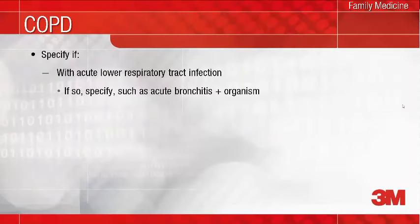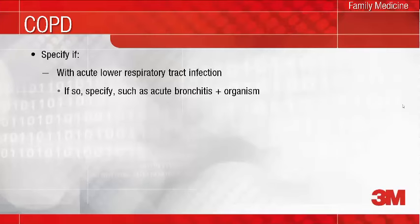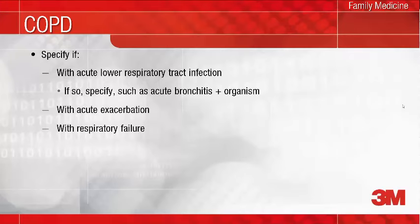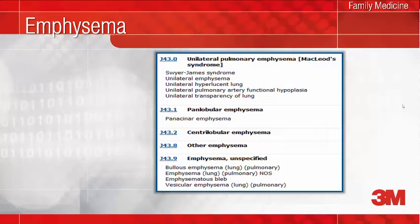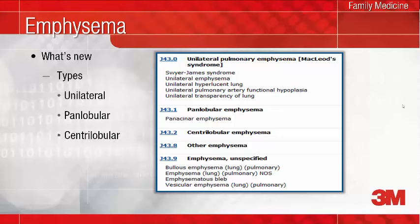ICD-10 differentiates COPD with acute lower respiratory tract infection from acute exacerbation of COPD without infection. When an infection is present, document the specific infection and organism when known or suspected. When respiratory failure is present, it should be specified as acute, acute on chronic, or chronic. Dependence on the use of supplemental oxygen should also be indicated when applicable. Most types of emphysema were grouped into a single ICD-9 code. What's new in ICD-10? Separate codes are provided for specific types of emphysema. When you document the specific type of emphysema, when known or suspected — such as unilateral, panlobular, or centrilobular — a unique ICD-10 code for that condition can be reported.